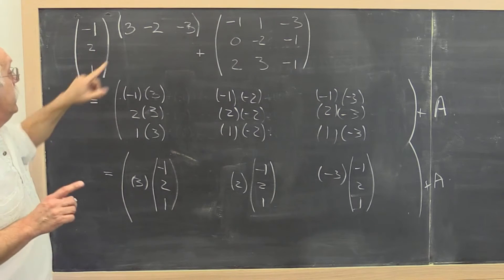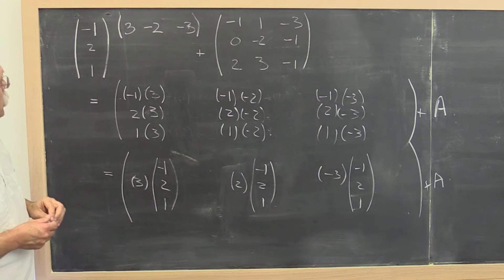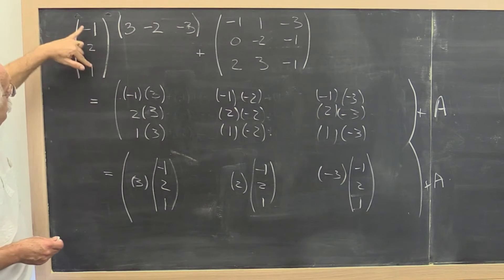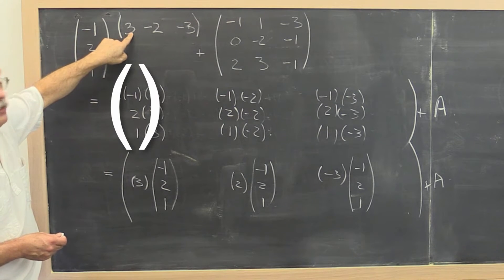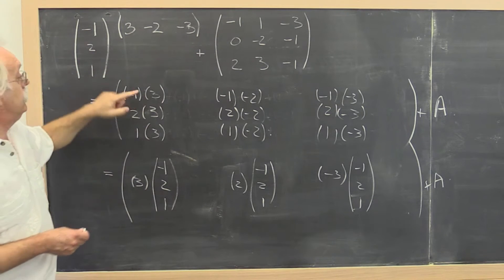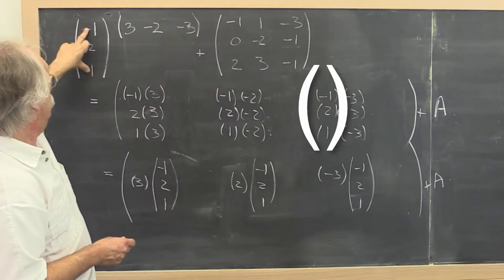Now if you work this out, what do you notice? You also notice that the first column of the result really is just this vector here times that element right there. See that? Second column is this times that. This times that.